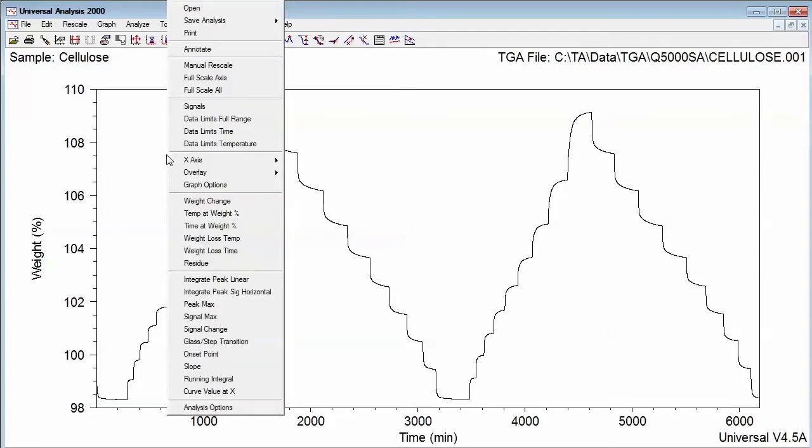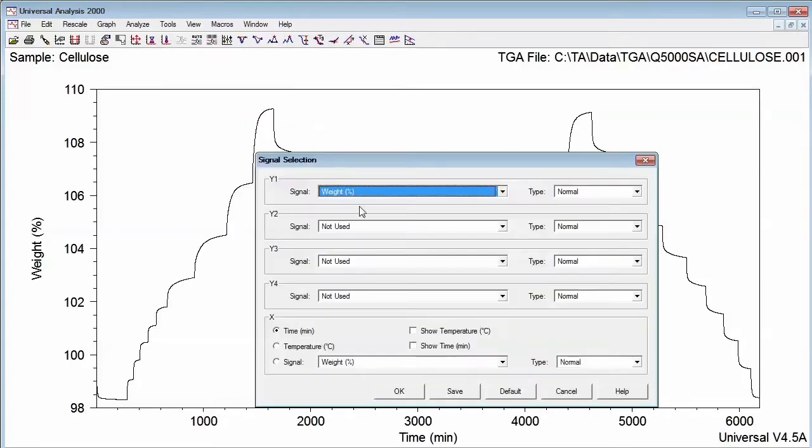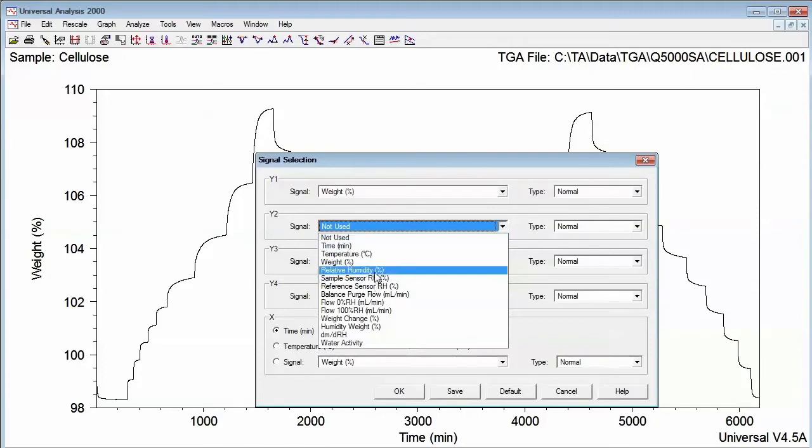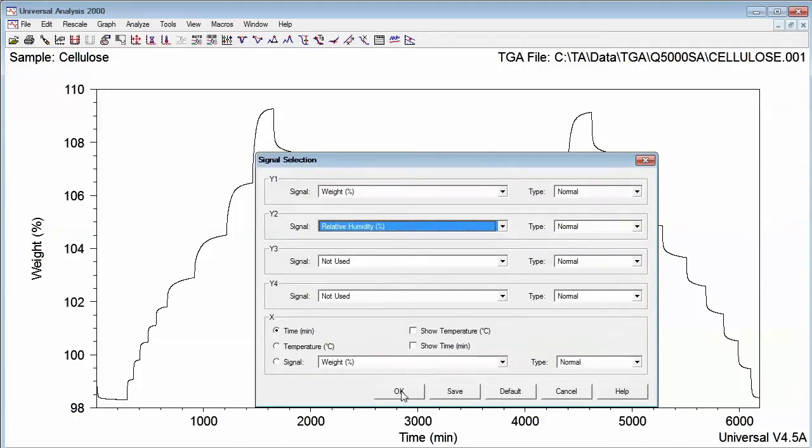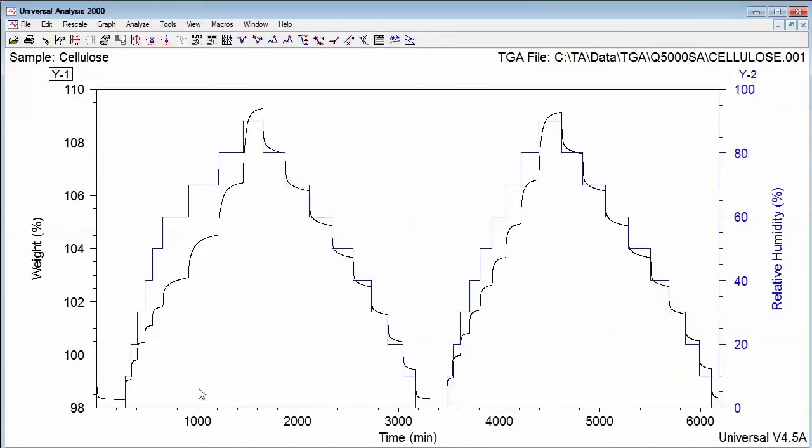I can also right-click, select signals, and add relative humidity as a signal to the plot. Here you can see that RH has been stepped incrementally from 0% RH to 90% RH, and two sorption and two desorption steps have been performed.